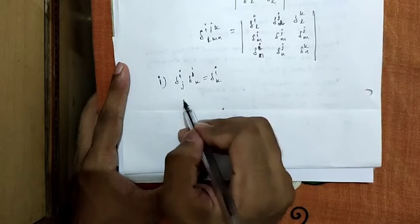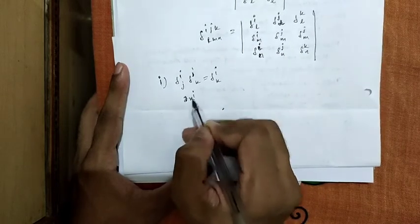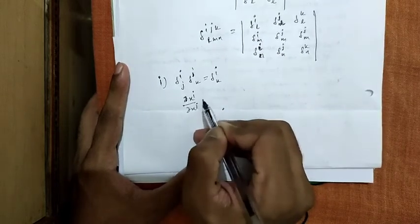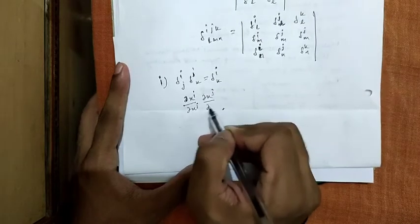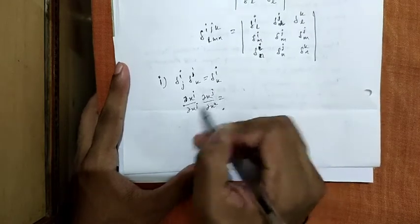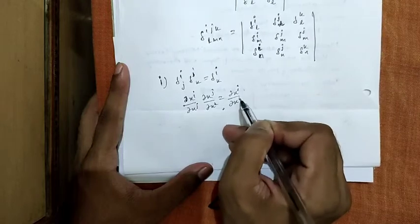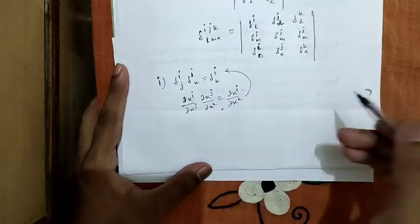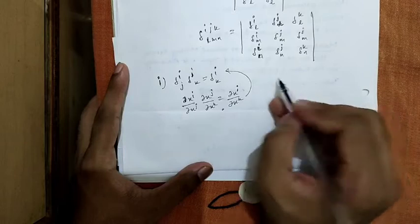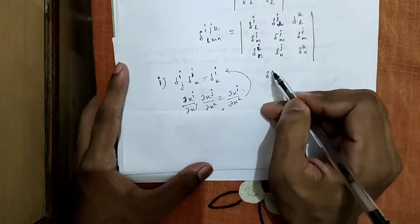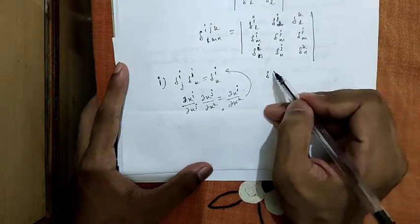Curl x_j over curl x_k equals to curl x_i over curl x_k, which is nothing but equal to del_i. We can also solve this in a similar way, as if I say that there is no summation over k.